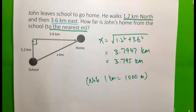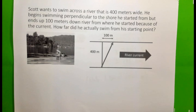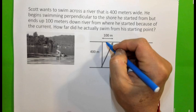Alright, finally, the last example. Scott wants to swim across a river that is 400 metres wide. He begins swimming perpendicular to the shore he started from but ends up 100 metres down river from where he started because of the current. How far did he actually swim from his starting point?